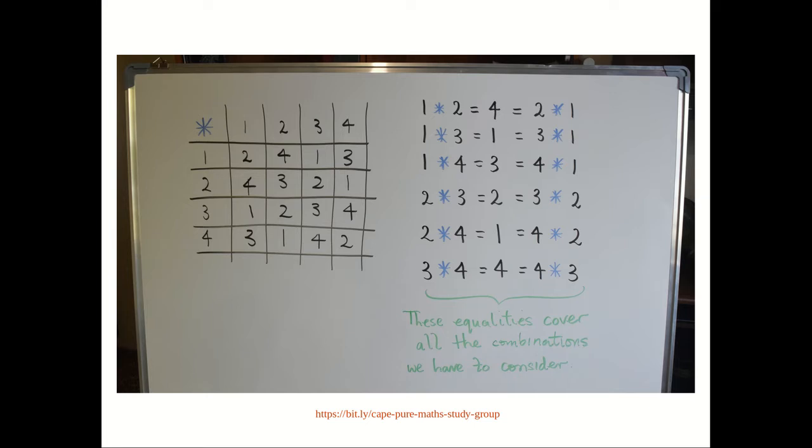Let's see. So it follows that a star b is equal to b star a for all a, b in the set {1, 2, 3, 4}. And so it follows that star is commutative.